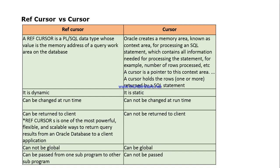Another important difference is that a reference cursor can be returned to the client, but a normal cursor cannot be returned to the client. This is the main advantage of a reference cursor. A reference cursor is one of the most powerful, flexible, and scalable ways to return a query result from an Oracle database to a client application.